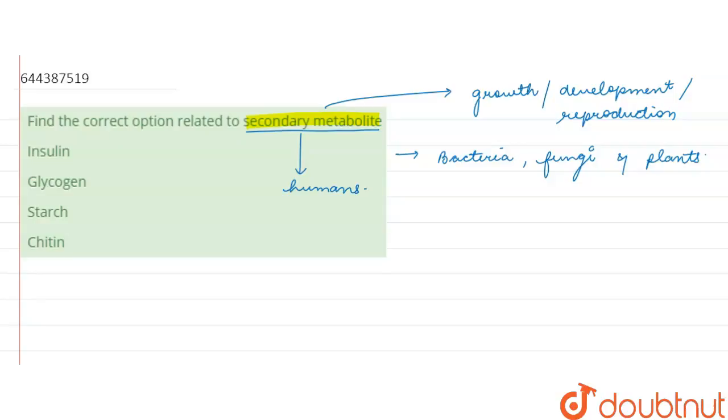Insulin is the secondary metabolite which can be formed from recombinant E. coli. Recombinant E. coli can produce insulin as a secondary metabolite which can be used for commercial purposes, that is for diabetes. So insulin is the correct answer.